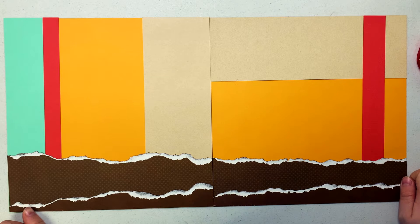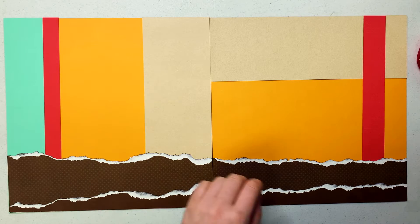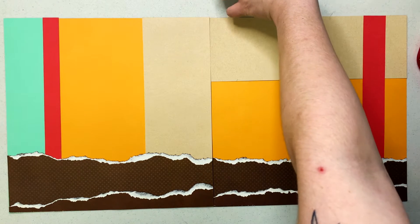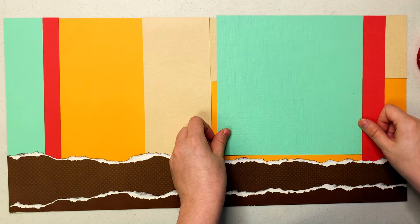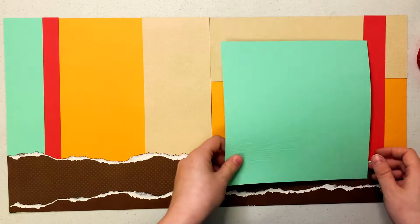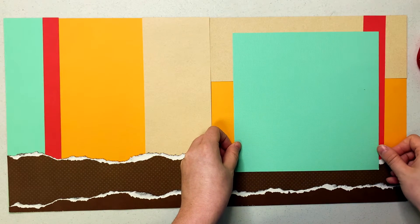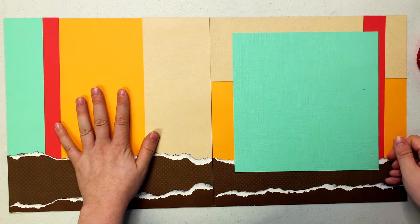All right, so I did go ahead and adhesive all of that down. Next I'm going to bring in some of my photo mats so I have this really cool teal color on this side that I want to include. And then on this side I think maybe I'll layer it like that.